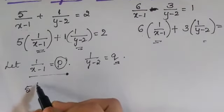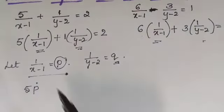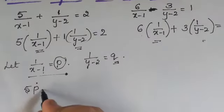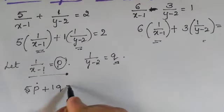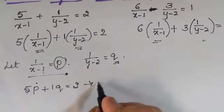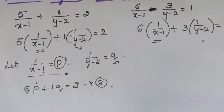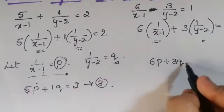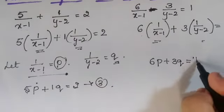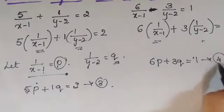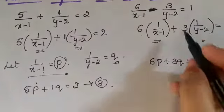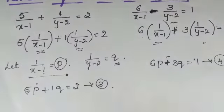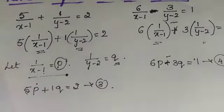Now let me substitute those values. 5 into p plus 1 into q equals 2 — let me take this as equation number 3. And 6 into p minus 3q equals 1 — let me take this as equation number 4. Note: there is a negative sign, so it is minus 3q equals 1.